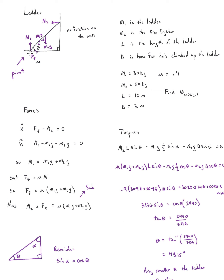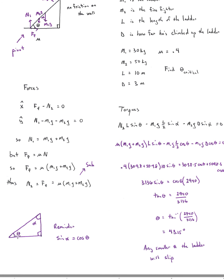For the torque equation, I place the pivot at the base of the ladder. N1 and friction don't cause a torque since they act at the pivot. Torque is always force times lever arm times sine of the angle between them. If the angle at the base is theta, then the angle between N2 and the ladder up top is also theta, so the torque due to N2 is N2 times L times sine theta. For the weights, the angle between the downward force and the ladder is alpha, and since sine of alpha equals cosine of theta, I replace sine alpha with cosine theta throughout.